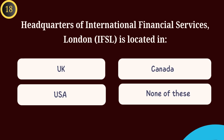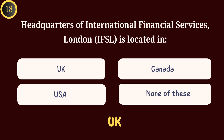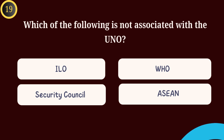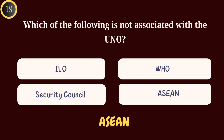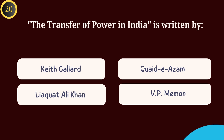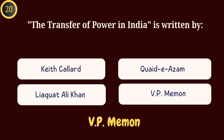Question 18: Headquarters of International Financial Services London (IFSL) is located in — Answer: UK. Question 19: Which of the following is not associated with the UNO? Question 20: The Transfer of Power in India is written by — Answer: V.P. Menon.